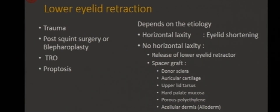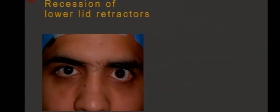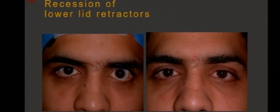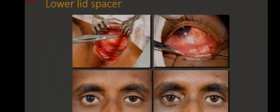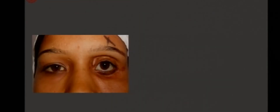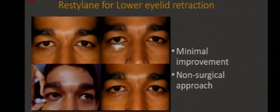For lower eyelid retraction, there can be various causes, and management depends on the etiology. If there is horizontal laxity, you do eyelid shortening. If there is no laxity, you recess the retractors or put a spacer. These are pre- and post-operative photographs of a patient who underwent recession of the lower eyelid retractors. For patients where lower eyelid retraction is associated with a prominent globe, it is a good idea to lengthen the eyelid using a spacer rather than only recessing the retractors. If there is associated hollowing of the lower eyelid along with retraction, you can add volume using a dermis-fat graft. A temporary correction can also be obtained by injecting fillers into the lower eyelid to stand the eyelid up and address the retraction.